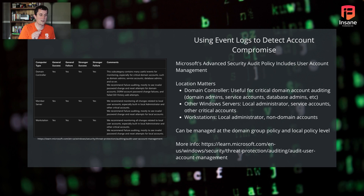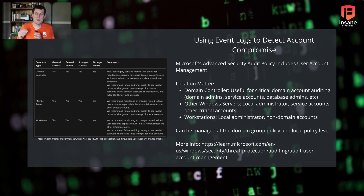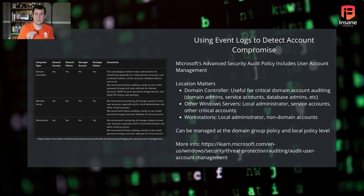Using event logs to detect account compromise — location does matter when we're digging into these logs. We've mentioned domain controllers. If you're looking for attacker use of domain credentials, you're going to need to go to the domain controller. This will help you look at those accounts that are critical: are they admin accounts, service accounts, database accounts, accounts for a given user for a given application? When you begin correlating these accounts and their behaviors, this is very powerful, even on a large domain.